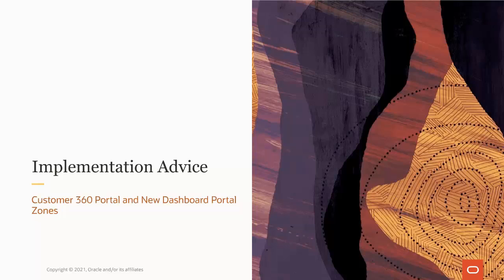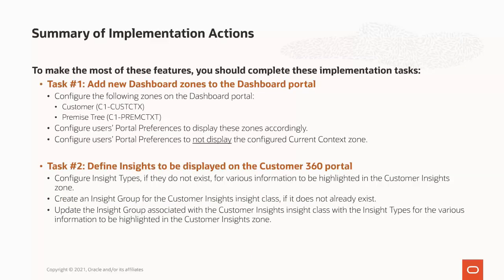In this implementation advice section, we will go through what you need to consider to make the most of the Customer 360 portal and new dashboard portal zones in your business. There are four main tasks you should complete. First, you must add the two new dashboard zones to the dashboard portal. After you have added these zones, users' individual portal preferences should be configured to display these zones in the appropriate location. Additionally, the configured current context zone in the dashboard portal should be set to not be displayed.